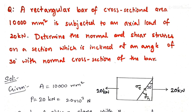Now we are seeing a problem from the topic principal stresses and strains. Let us see the problem. A rectangular bar of cross-sectional area 10,000 mm square is subjected to an axial load of 20 kN. Determine the normal and shear stresses on a section which is inclined at an angle of 30 degrees with the normal cross section of the bar.